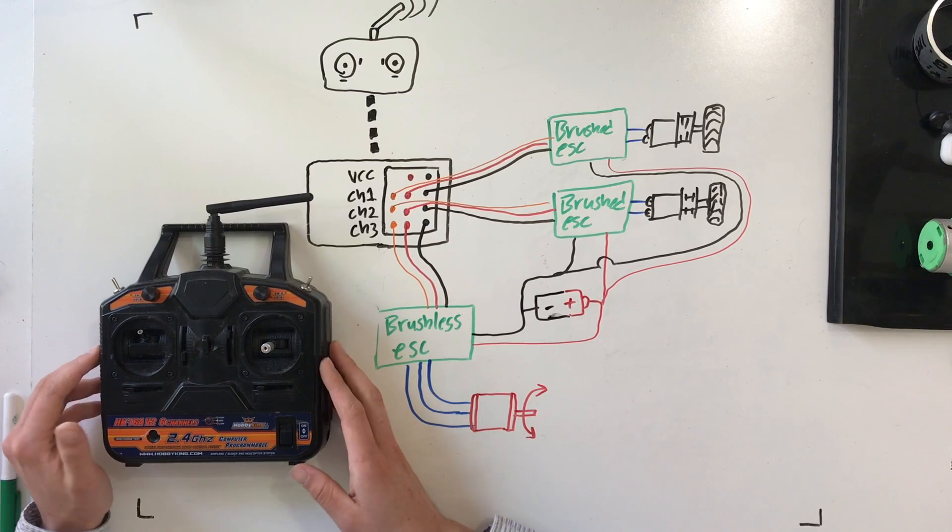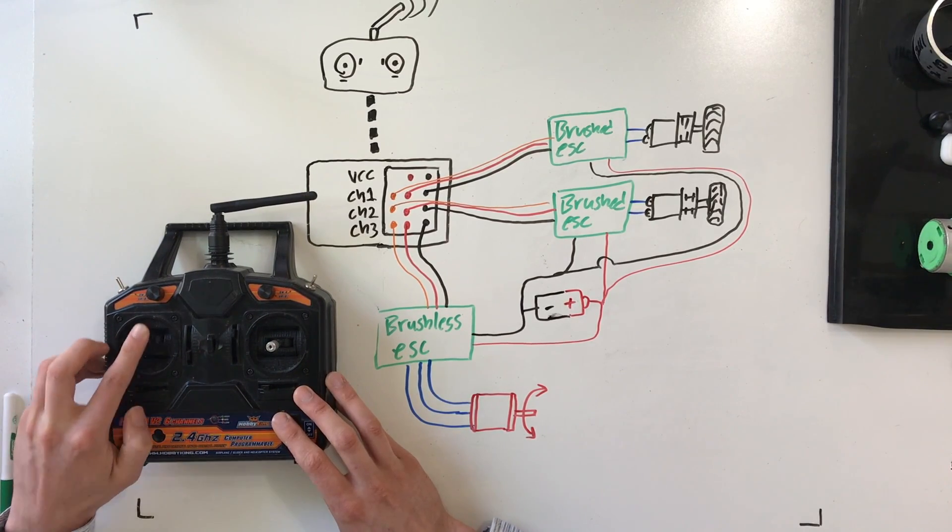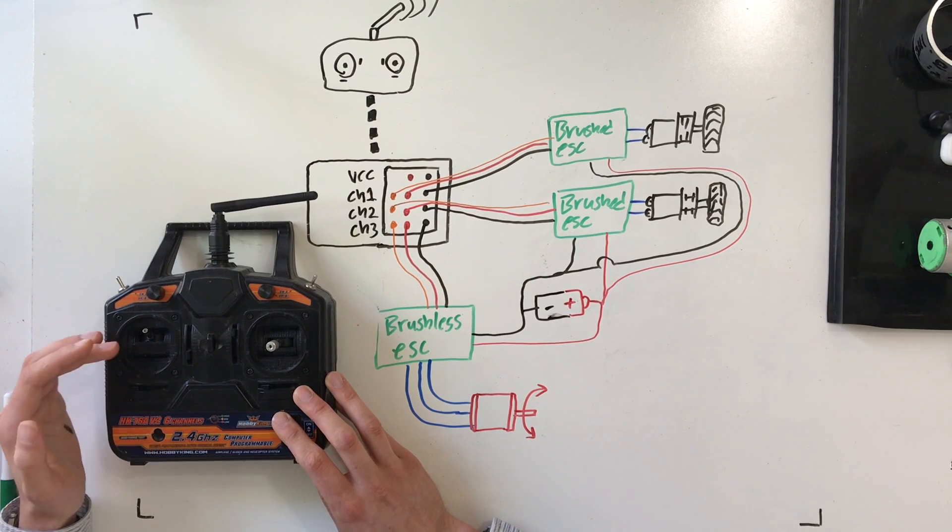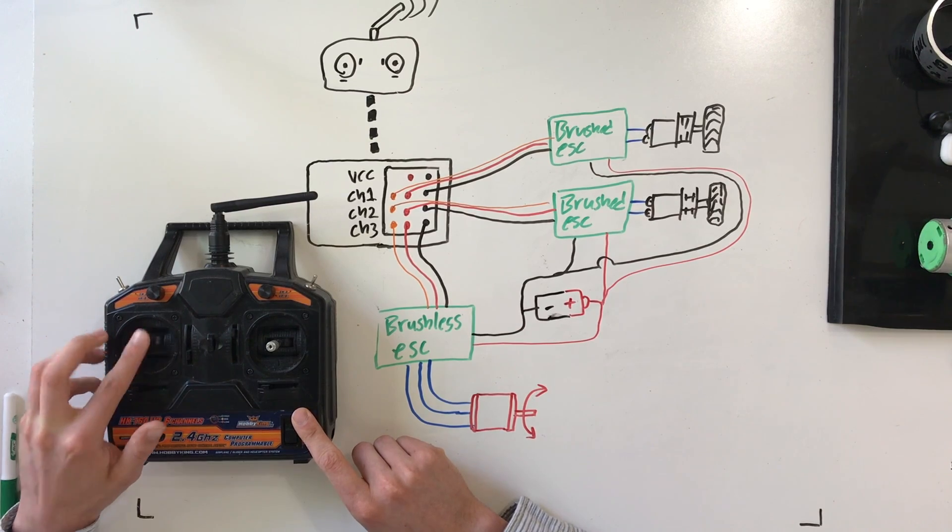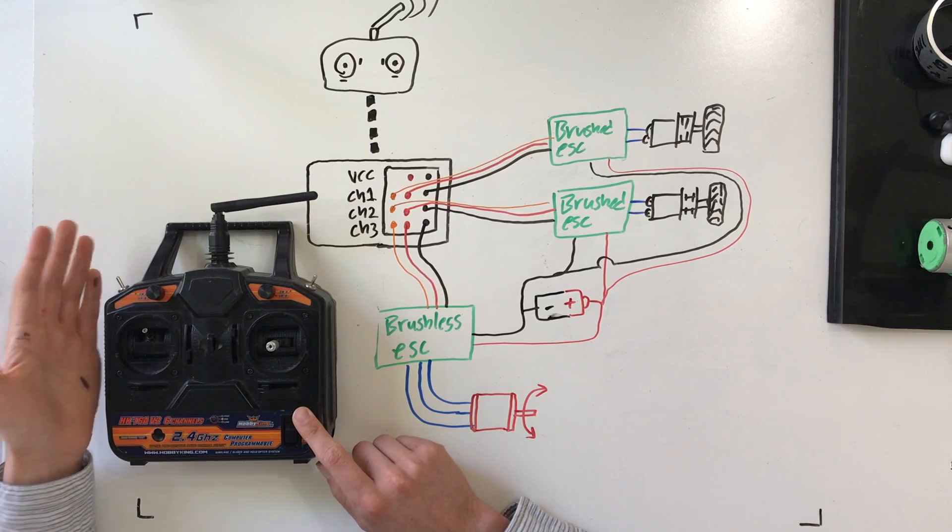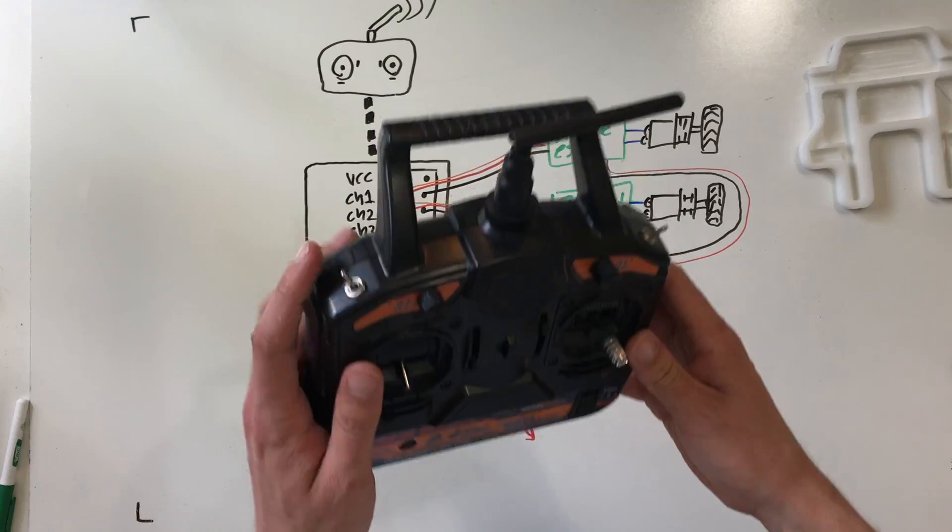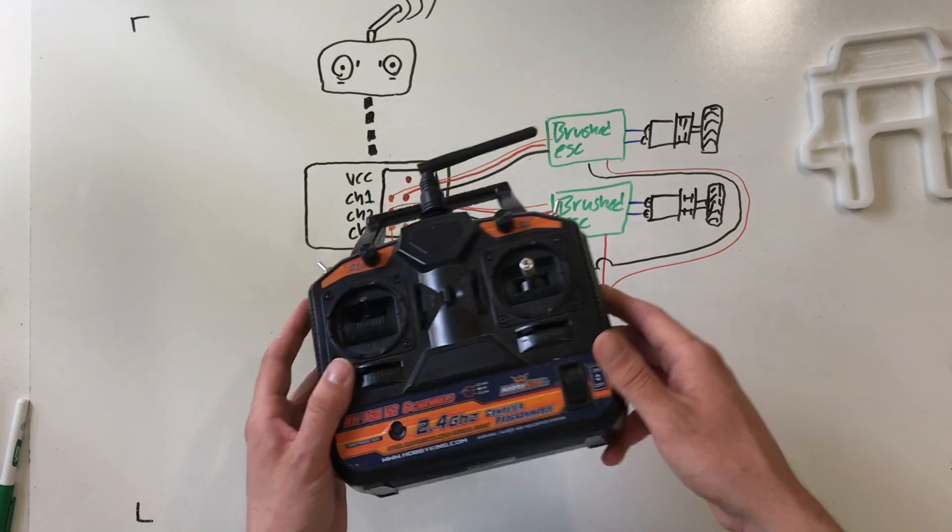And that's because on the remote I have here and on many RC airplane remotes, channel 3 is the throttle and it does not have a self-centering gimbal. So you can see how this gimbal pops back to center, but channel 3 doesn't. It just stays where it is, which lets you throttle up, let go, and the weapon will continue to spin. And if your remote has a lockout, make sure that's flipped, otherwise the throttle won't do anything.